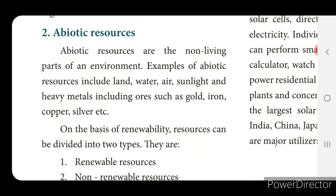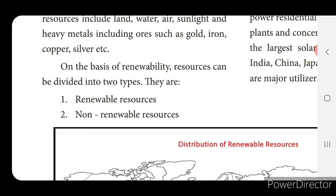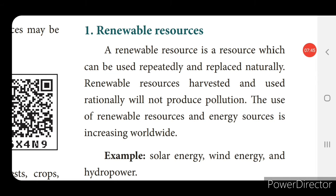On the basis of renewability, resources can be divided into two types: renewable resources and non-renewable resources. A renewable resource is a resource which can be used repeatedly and replaced naturally. Renewable resources, if harvested and used rationally, will not produce any pollution.